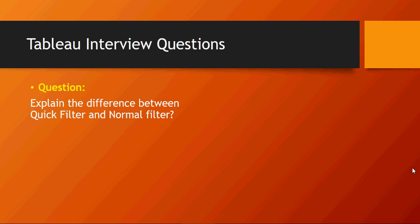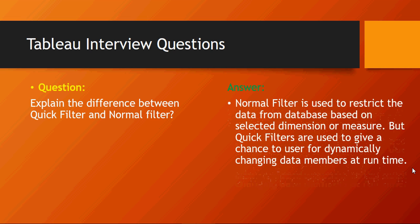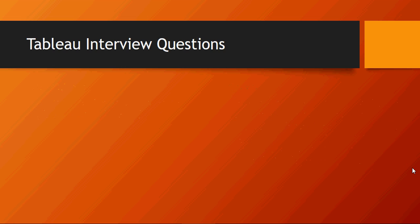Next is: explain the difference between a quick filter and a normal filter. A normal filter is used to restrict data based on a dimension or measure, while a quick filter is used for filtering data members at runtime — when you quickly want to filter something on the fly.